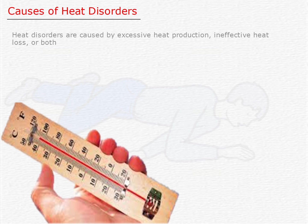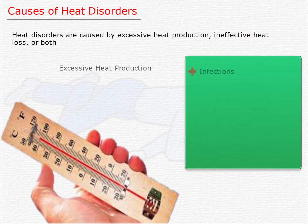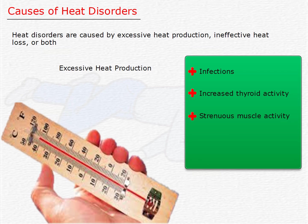Heat disorders are caused by excessive heat production, ineffective heat loss, or both. Excessive heat production can be caused by infections that cause fever, increased thyroid activity which speeds up the body's metabolism, strenuous muscle activity during exercise or physical labor, particularly among obese people, or disorders such as seizures, agitation, or alcohol or drug withdrawal. Certain drugs also increase the risk of heat illness.